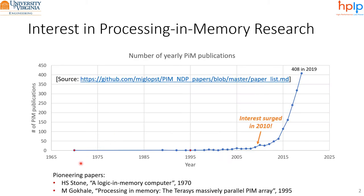In 1970, Harold Stone publishes the paper titled 'A Logic and Memory Computer,' pioneering processing-in-memory research. The topic hadn't seen much interest during the first four decades, with only a few papers per year published. However, around 2009-2010, research interest surged. The community went from a few papers per year to 10, 20, 40, and up to 408 in 2019. Today there are even some products on the market.